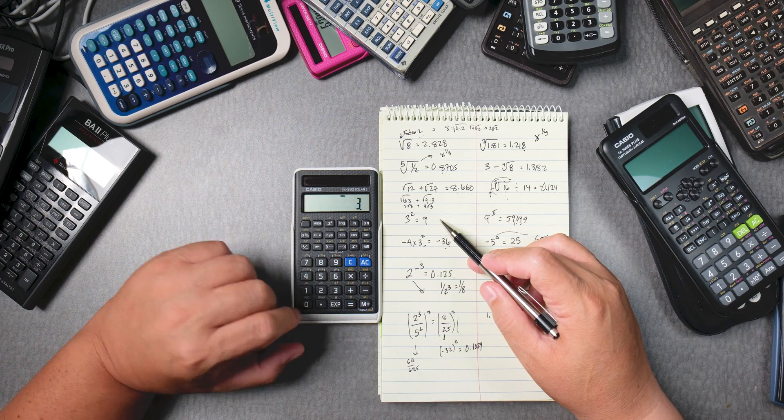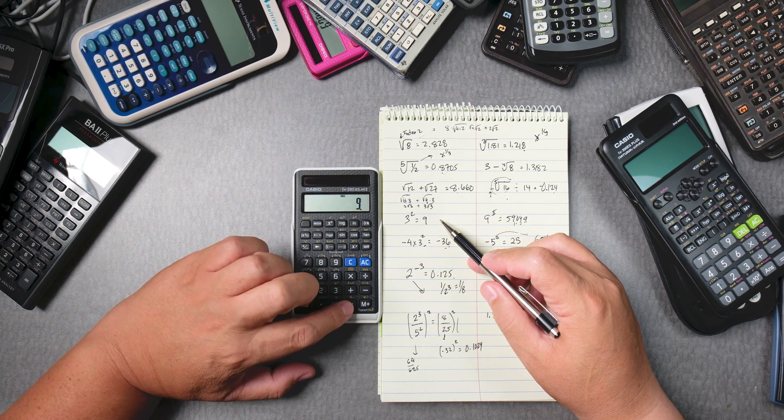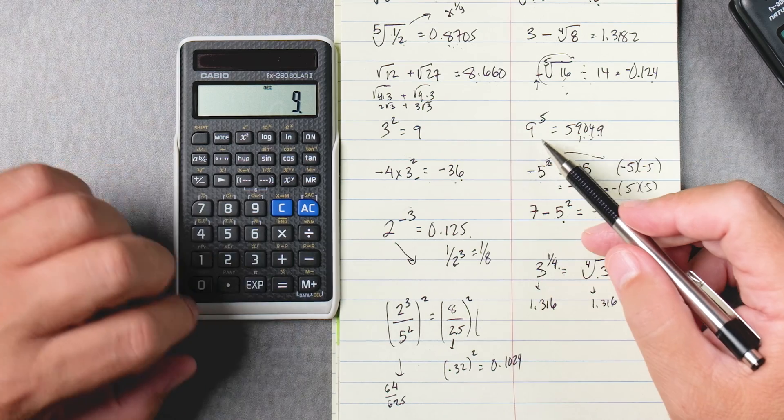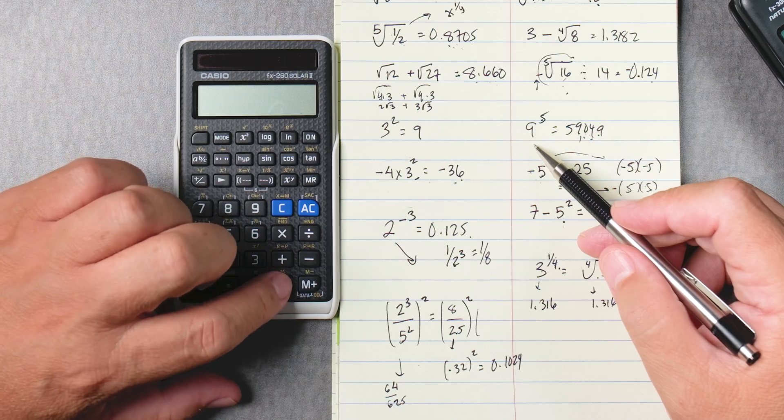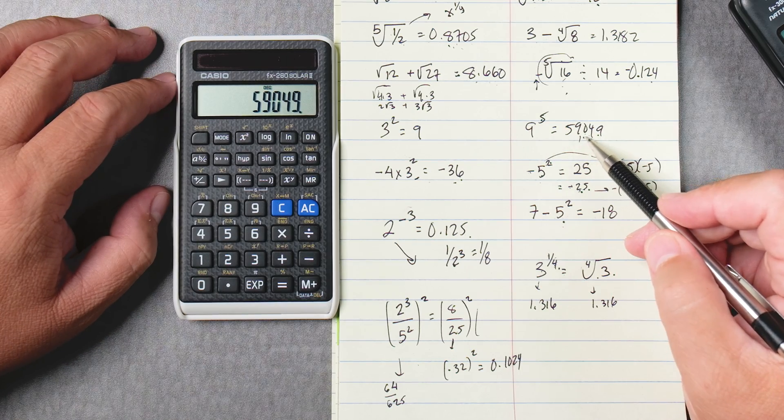Okay let's do this one. Three squared that's nine. You see you don't even have to press equals. Nine right, x to the y five equals 59049.